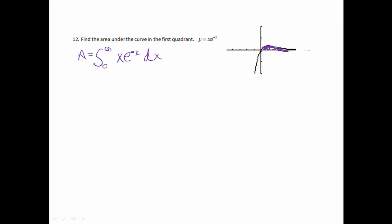Now from here, this is an improper integral, because we can't actually plug in infinity. So we are going to change this to the limit. So it's going to be the limit as w approaches infinity of 0 to w of xe to the negative x dx.